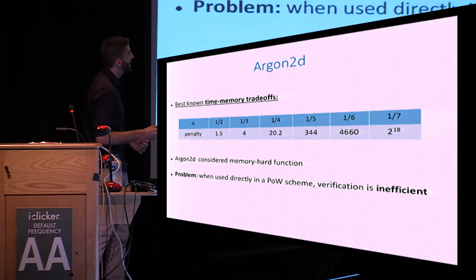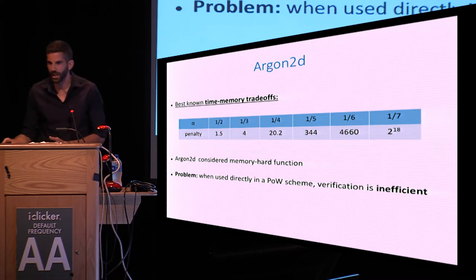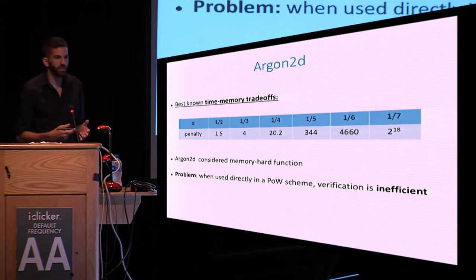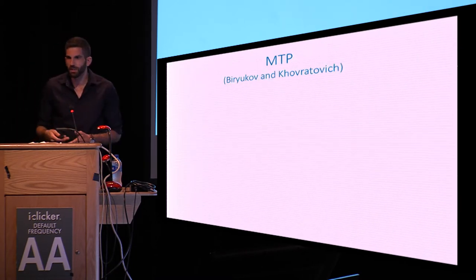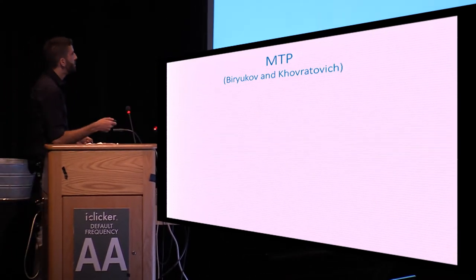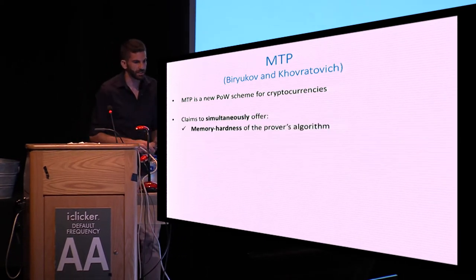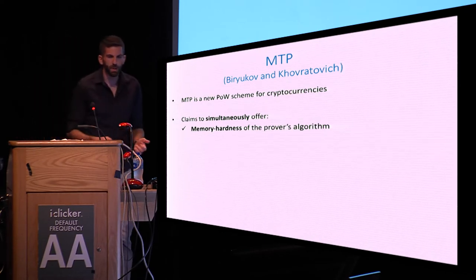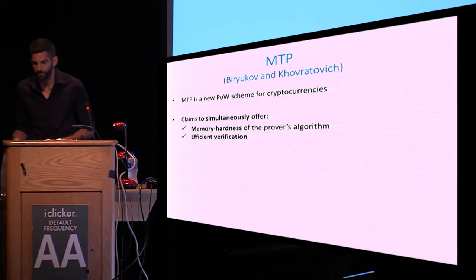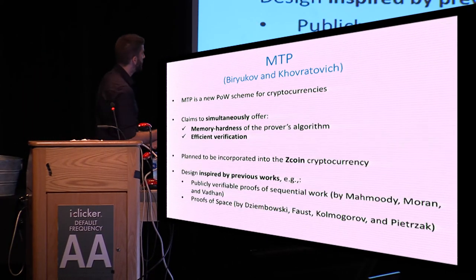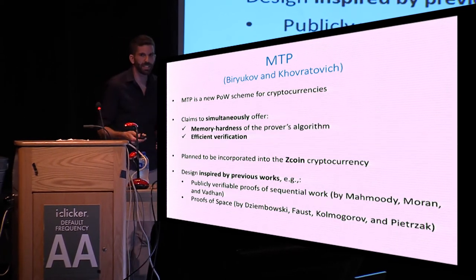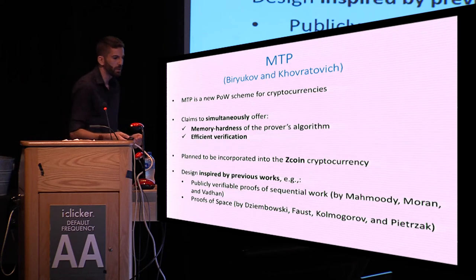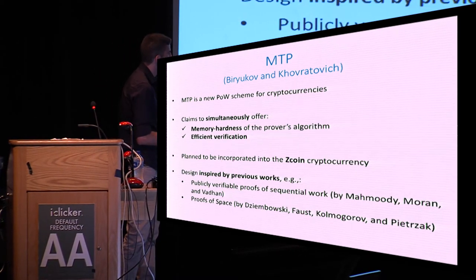We can try to think what can be done to use Argon2D as a proof-of-work in the cryptocurrency setting. The problem is that verification would be inefficient — the verifier would have to compute the entire array to verify the proof. This leads to the main subject of this talk: the MTP proof-of-work scheme. MTP was presented by the same designers of Argon2D, and they claim that MTP simultaneously offers both memory-hardness of the prover's algorithm and efficient verification. Achieving each property separately is trivial, but getting them simultaneously is much more challenging. MTP is a concrete proof-of-work scheme and was originally planned to be incorporated into the Zcoin cryptocurrency.